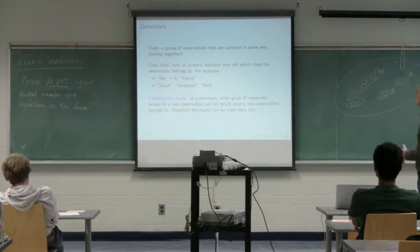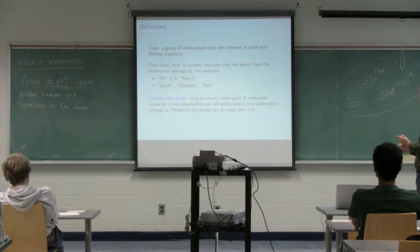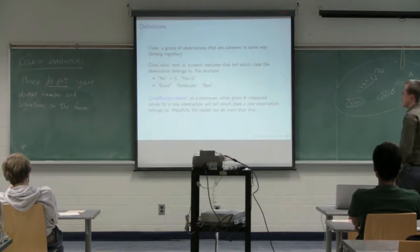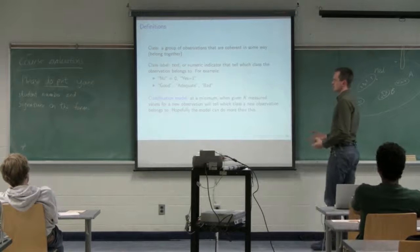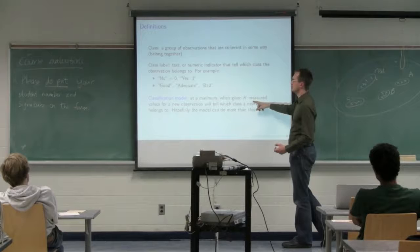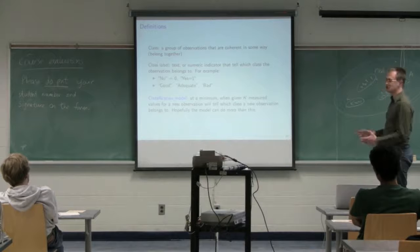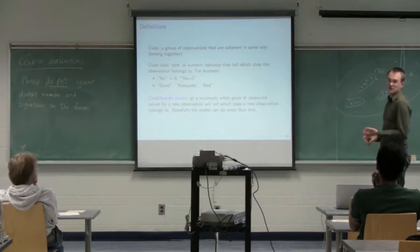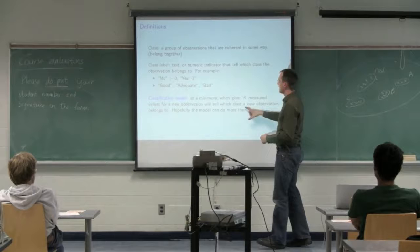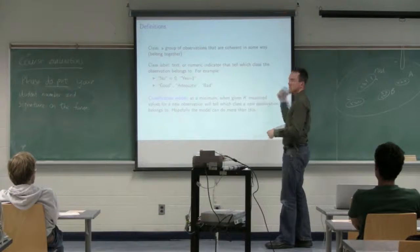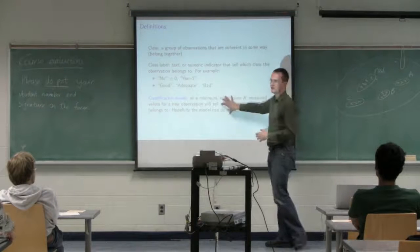Now, a classification model is a very broad concept. It can be as simple as a single data variable model or a whole collection of models which together form a single classifier. What it does is, it's just a black box where when you give it K values from a new observation, it will spit out at the end a decision. It will tell you which class that new observation belongs to. Does it belong to category no or yes? Does it belong to category good, adequate, or bad?